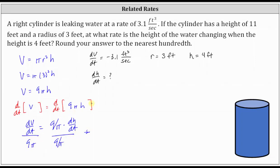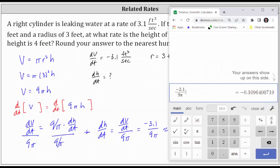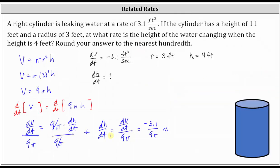Simplifying, we now know that dH/dt is equal to dV/dt divided by nine pi. Since dV/dt equals negative 3.1 cubic feet per second, dH/dt is equal to negative 3.1 divided by nine pi. Rounding to the hundredths place, this gives us approximately negative 0.11. Therefore, dH/dt is approximately negative 0.11.